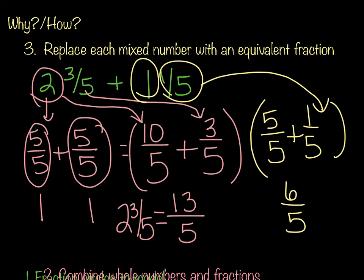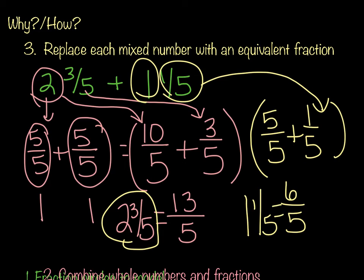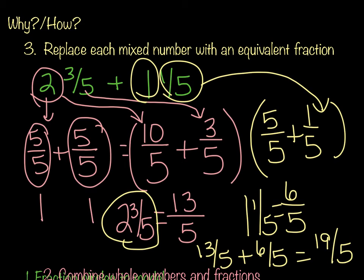So now we're looking at 13 fifths, replacing my 2 and 3 fifths, and we're looking at 6 fifths, replacing my 1 and 1 fifth. And basically what we would do then is take the 13 fifths plus 6 fifths, and that would give me 19 fifths. And that is the method replacing the mixed numbers with an equivalent fraction. So basically you're taking that whole number, turning it into a fraction, and adding that to the fraction that you already have with your mixed number. It's kind of a long process, but it takes some practice, and it does make sense once you get the hang of it.